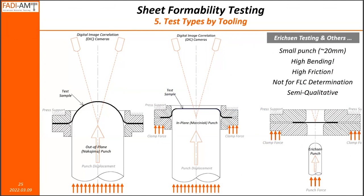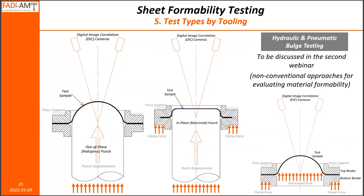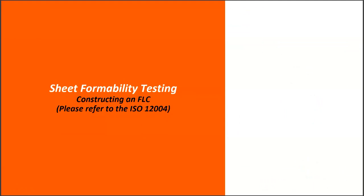There are some other formability tests worth mentioning. Ericsson testing uses a 20 millimeter punch — basically a small punch that involves more bending and friction — but it's not really used for FLC determination. It's more of a semi-qualitative test driven by the height of the dome generated by the punch. Another test is the bulge test, whether hydraulic or pneumatic. That's not a standard test for FLC, but we will show in the second webinar how you might need this test, especially the hydraulic bulge test, for obtaining FLCs for certain materials where Nakajima and Marciniak fail to address the material's needs.